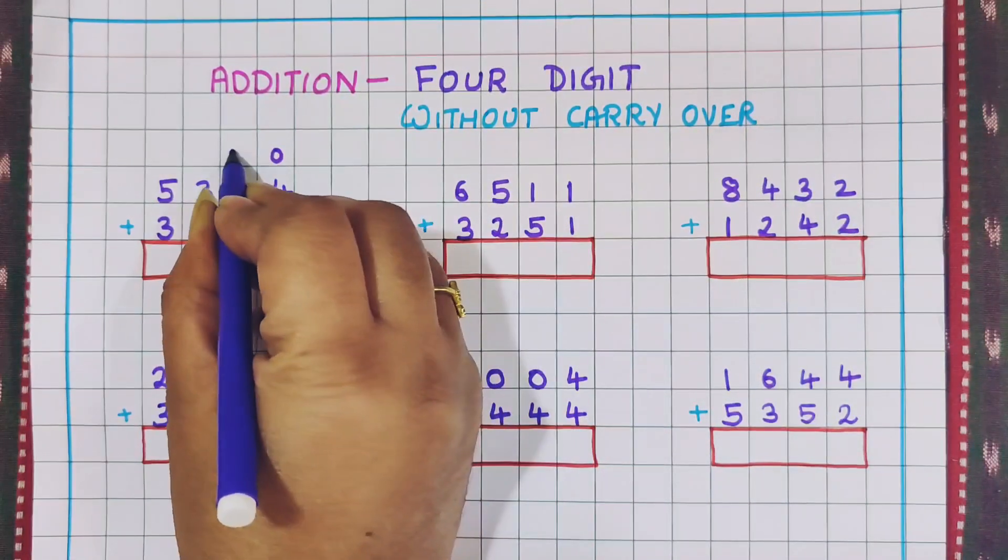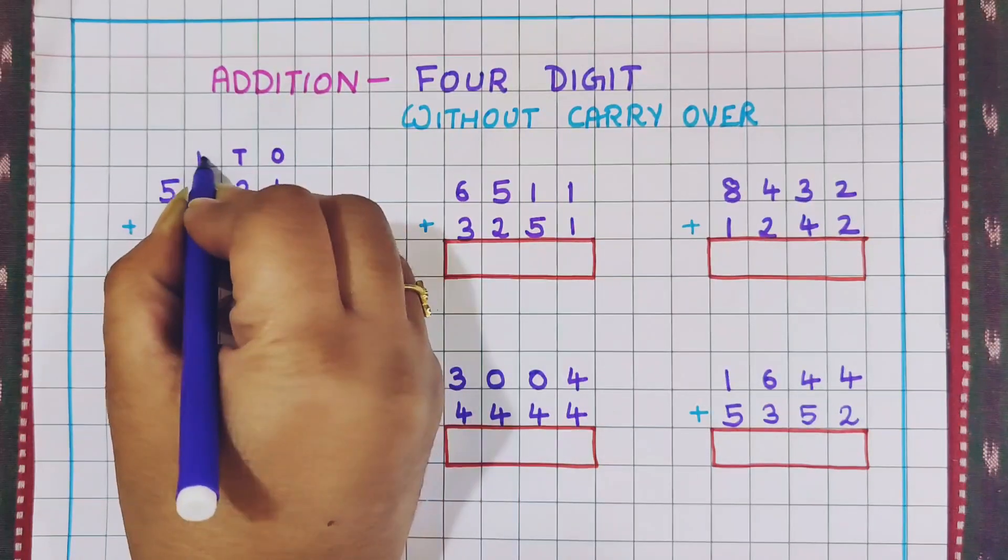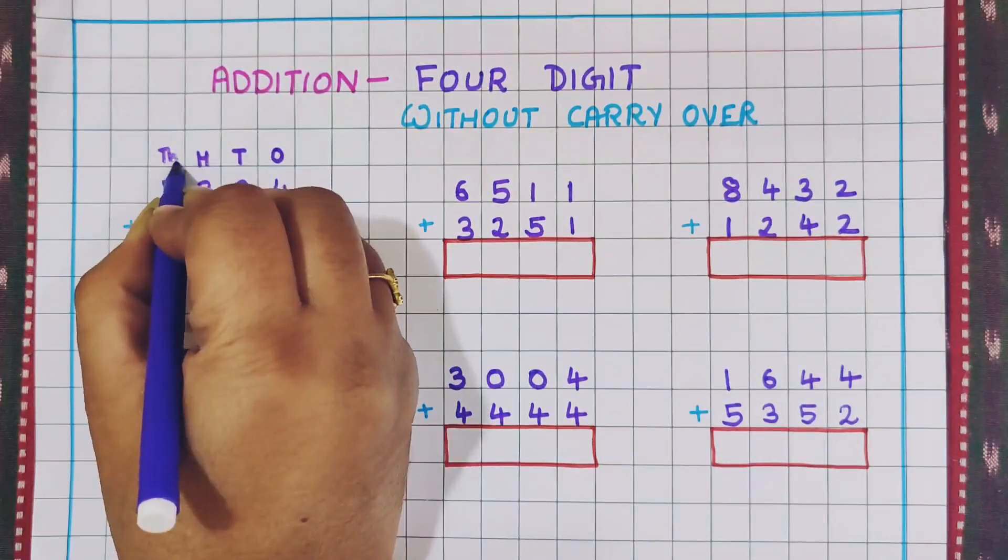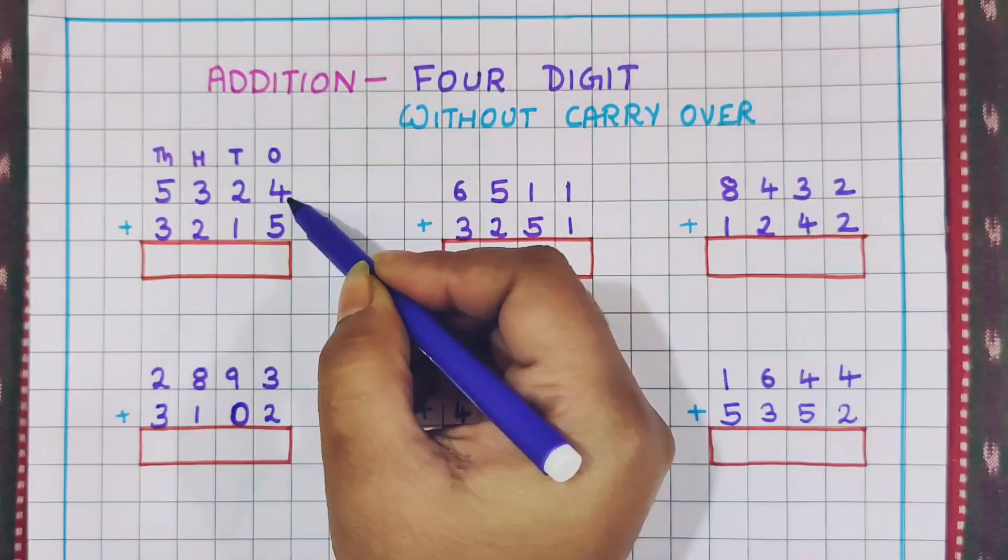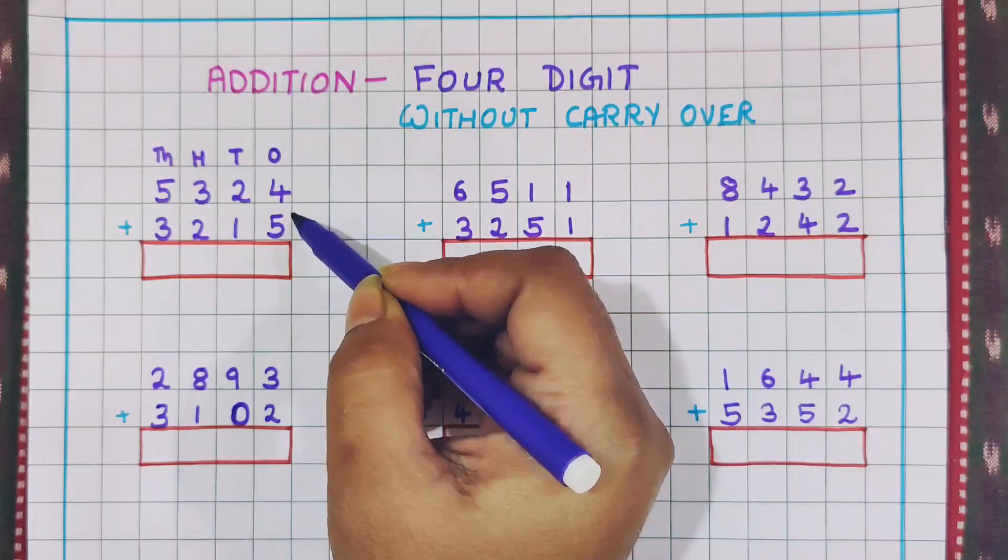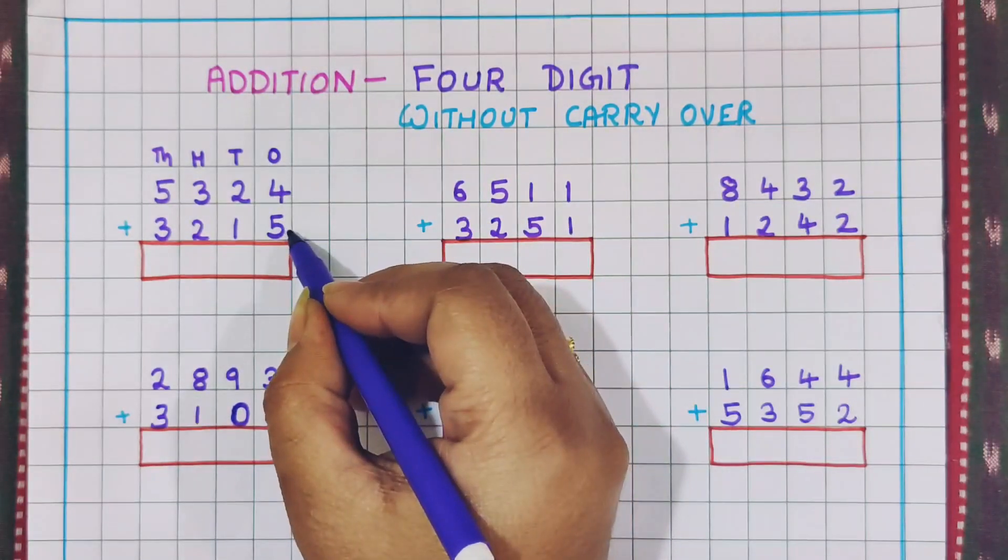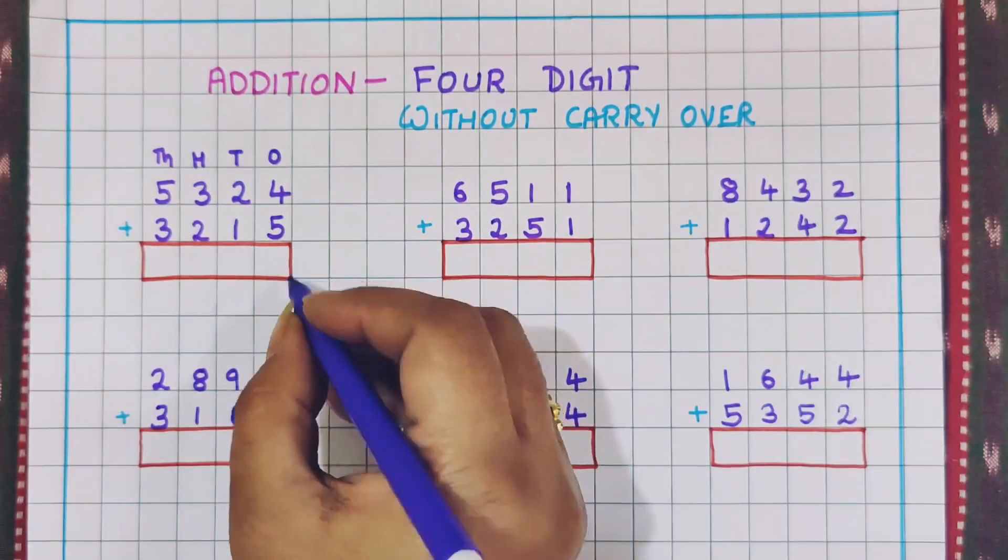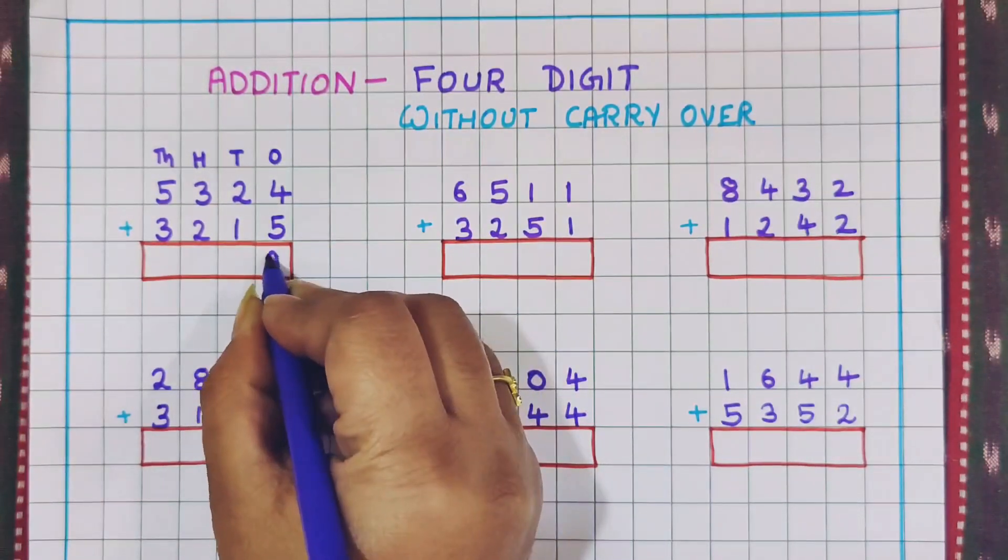Ones, tens, hundreds and this is the thousands place. So here we will start the addition from the ones place. Now 4 plus 5, 4 plus 5 is 9. So I will write here 9.